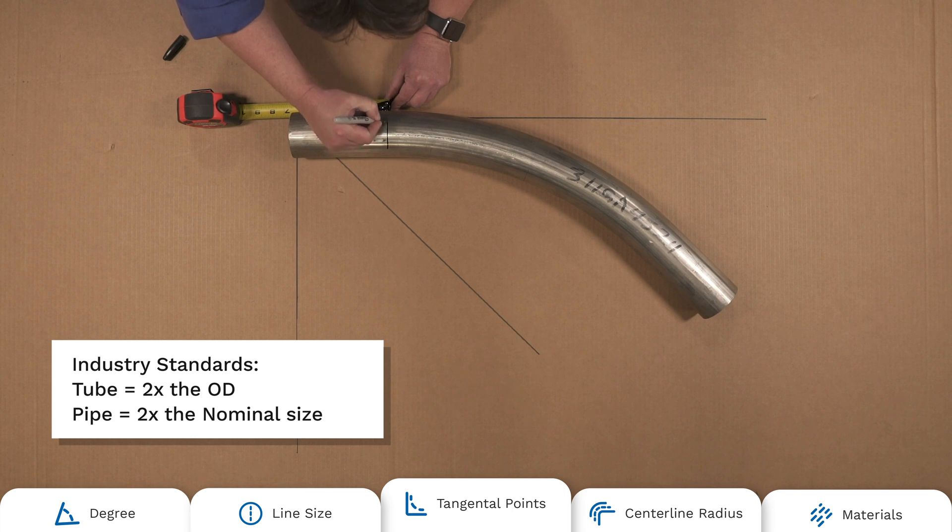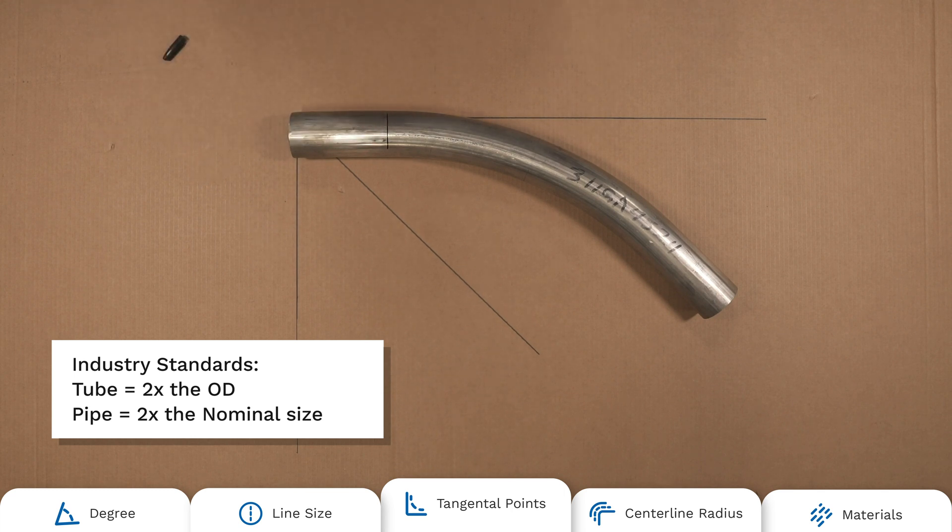You'll use your tangential points to get your centerline measurement for a true reading of how far your centerline radius extends.